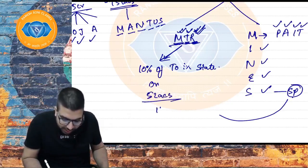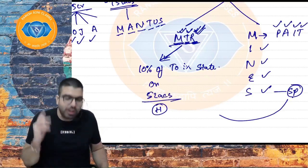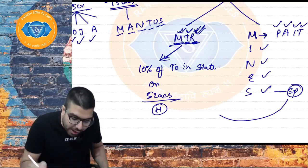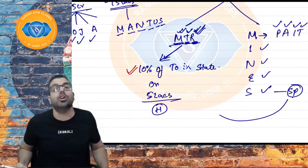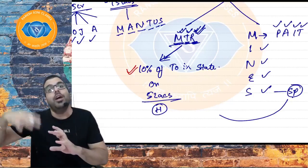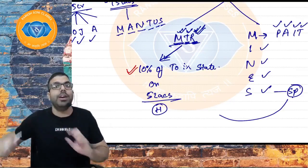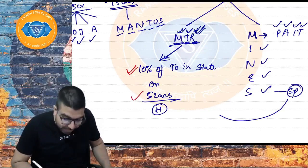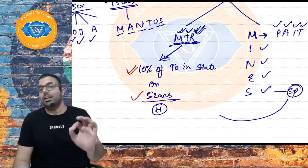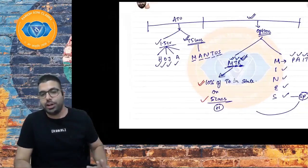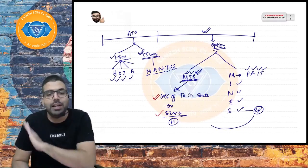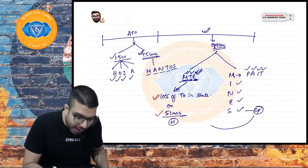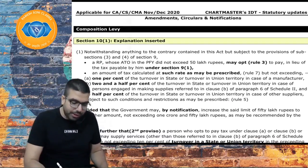The option was not given to MINES — M for manufacturer of Pan Masala, Aerated water, Ice cream, Tobacco (PAIT); I for interstate outward supplier; N for non-taxable goods supplier, NRTP, CTP; E for person supplying goods through e-commerce; S for service provider. However, restaurant and catering service providers, even though they provide a service, were allowed to take composition scheme. Manufacturer, trader, and restaurant were also allowed to provide marginal services of up to 10% of turnover in state in the preceding financial year, or five lakh, whichever is higher.